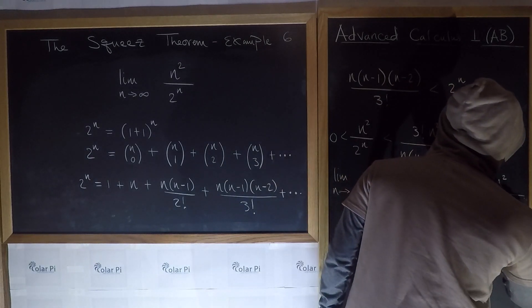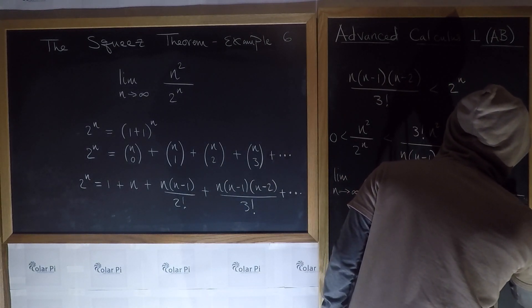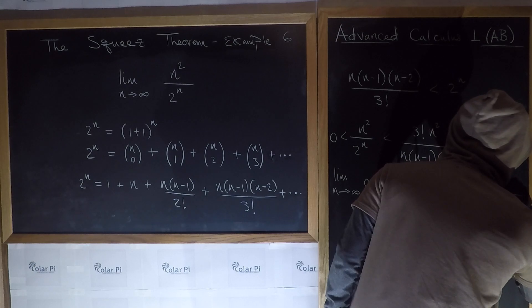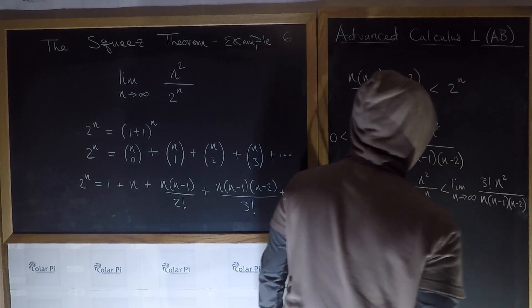lim as n goes to infinity of 3 factorial n squared all over n times n minus 1 times n minus 2. Right? Okay, cool.